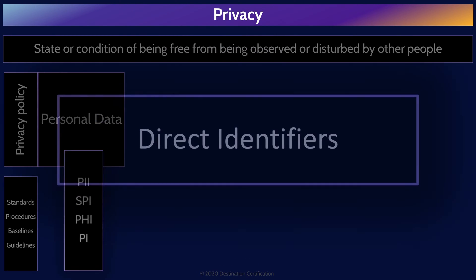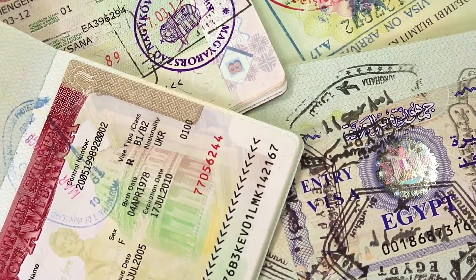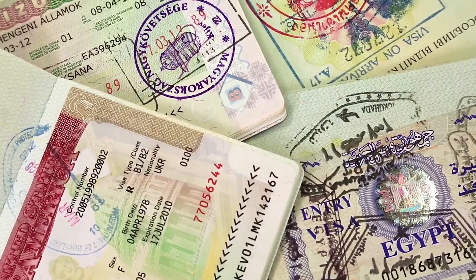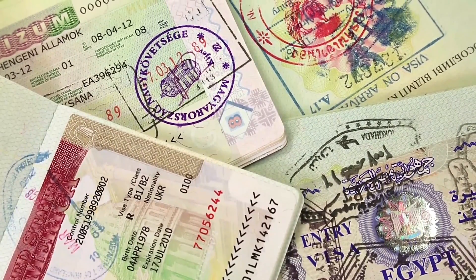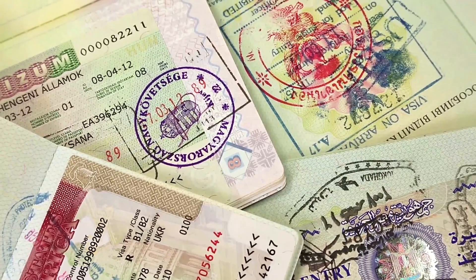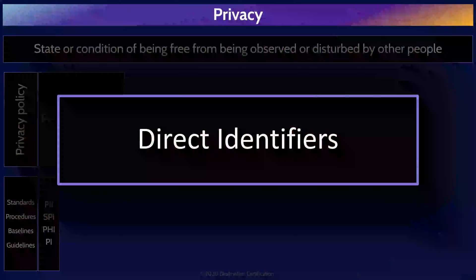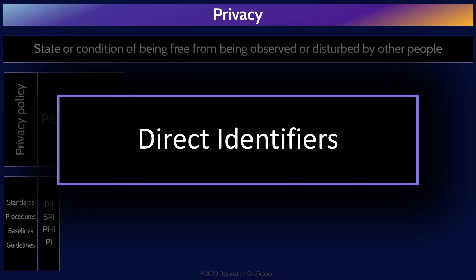There is also the concept of what data can identify an individual and to what degree. Direct identifiers identify an individual on their own. So direct identifiers are things like government IDs, social insurance numbers, social security numbers, driver's license numbers, passport numbers, as well as bank account numbers, certificate numbers, phone numbers, names, and biometric data. These are all direct identifiers.